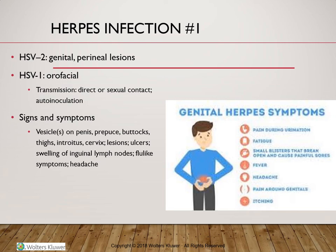HSV-2 is responsible for genital and perineal lesions, however we can see cross-contamination between type 1 and type 2. Transmission occurs by direct contact with oral or genital secretions from a person during an active stage of the disease, or during periods of asymptomatic viral shedding — auto-inoculation. Transmission can also occur from mother to infant during vaginal birth, which carries a higher risk of neonatal mortality. Active lesions on the perineum or genital area during birth mandate a cesarean section.